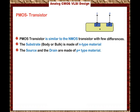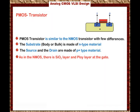As in the NMOS, there is a silicon dioxide layer and a poly layer at the gate. In CMOS technology, because both NMOS and PMOS are built on the same wafer, we have the same layer of polysilicon and silicon dioxide for both transistors.